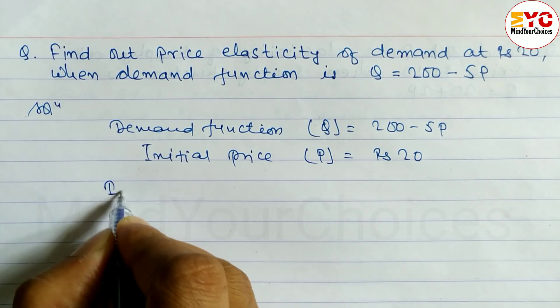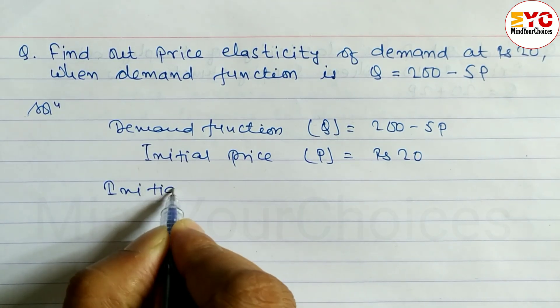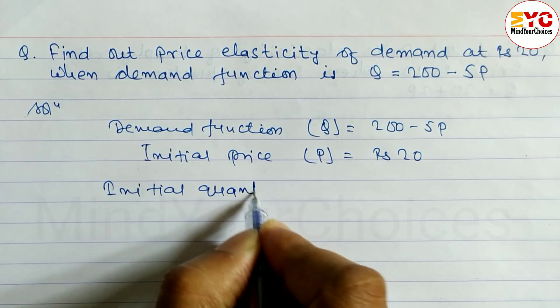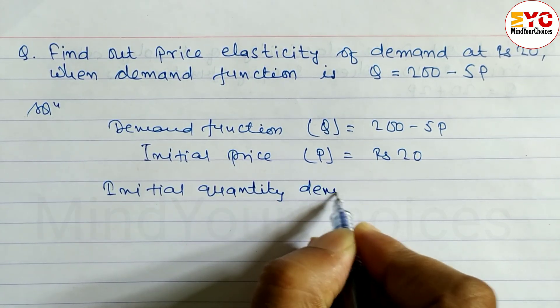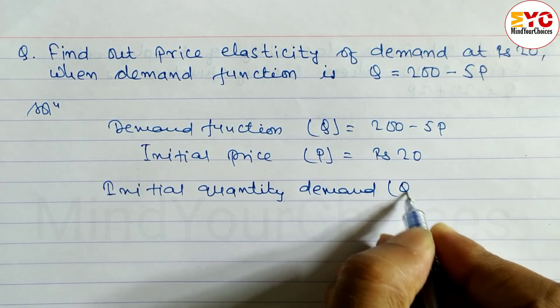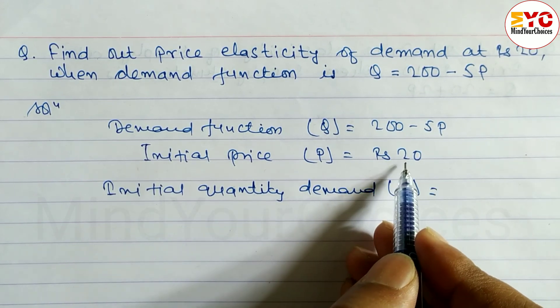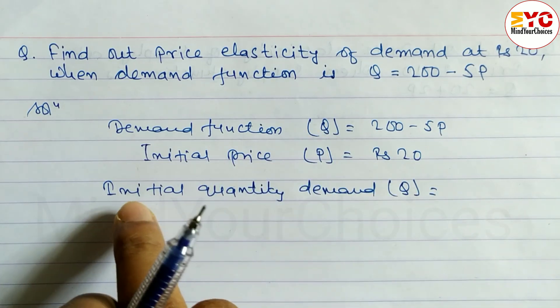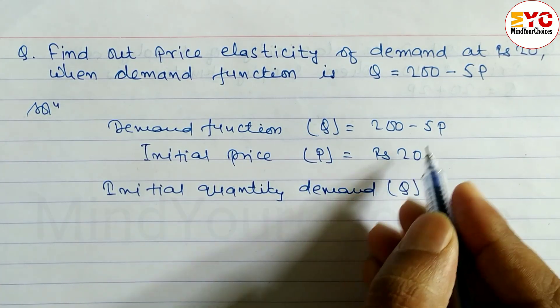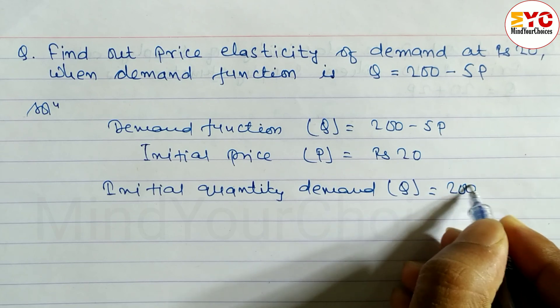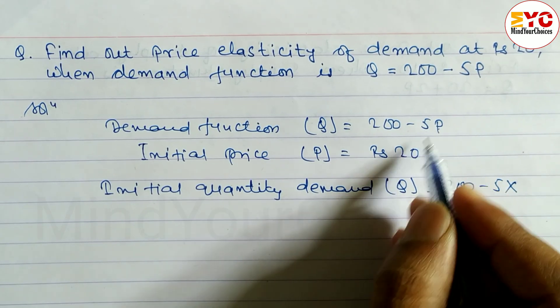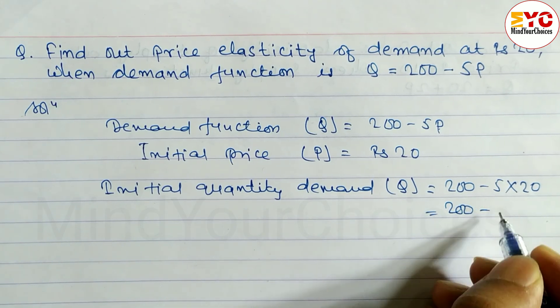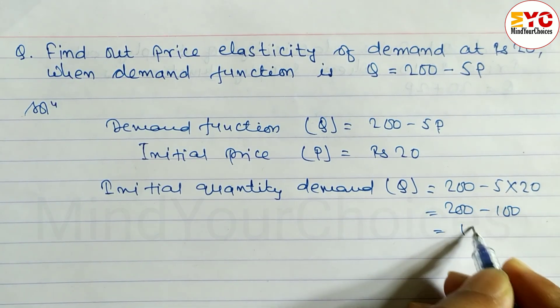Then we have to find out the initial quantity demanded. So Q equals 200 minus 5 into 20. That's 200 minus 5 times 20, which equals 100.